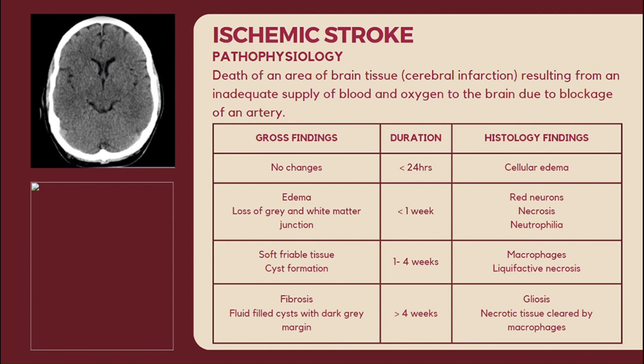Between one to four weeks post-stroke, gross examination may reveal soft, friable tissue and formation of cysts, while microscopic examination may reveal macrophages and evidence of liquefactive necrosis, indicative of ongoing tissue inflammation and repair. Beyond four weeks post-stroke, gross examination may show fibrosis and fluid-filled cysts with a dark gray margin, while histologically, gliosis and clearance of necrotic tissue by macrophages may be observed, indicating ongoing tissue remodeling and repair in the chronically affected brain tissue.